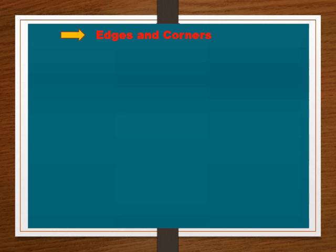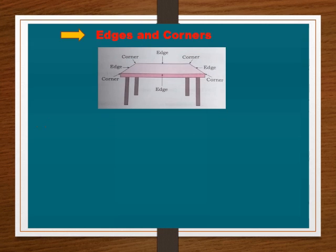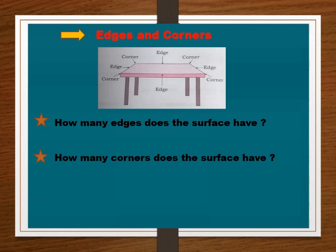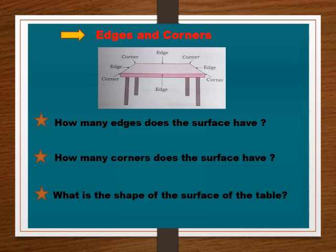What do you see here in the picture? Ya chitrat kaay distat ahe? We see a table. Itte aaplala ek table distat ahe. Observe the surface of the table. Ya tableachya varchya purustbhaaga neet nirikshan kara. How many edges does the surface have? Ya purustbhagala kiti kada aahe?